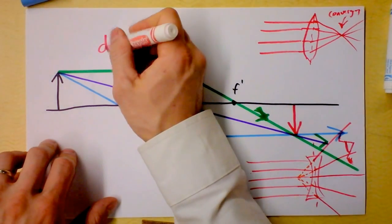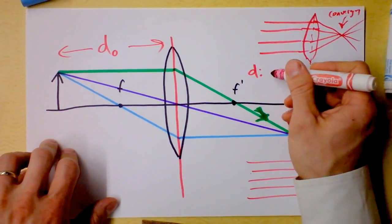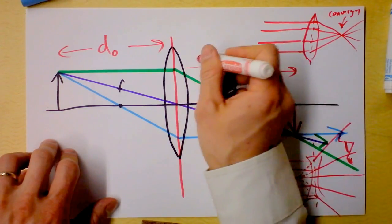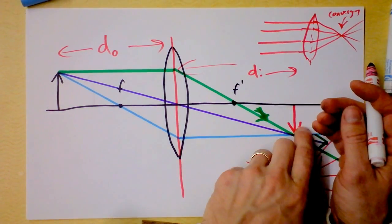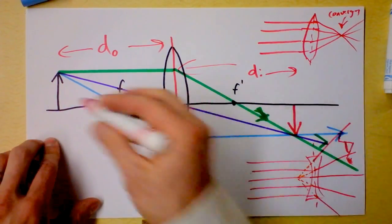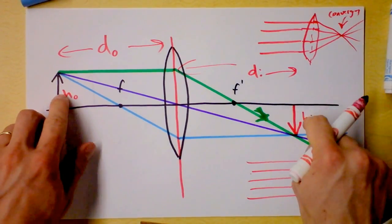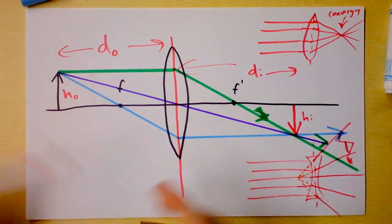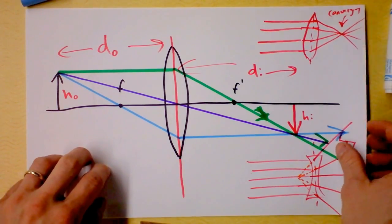We can define the same sorts of things. We can define the distance of the object over here and the distance of the image over here. Since the image is on the expected opposite side of the lens and it's a real image, then the distance of the image is positive. The distance of the object is positive. The height of the object is positive and the height of the image is negative. So where the rays converge, we actually have a real image.